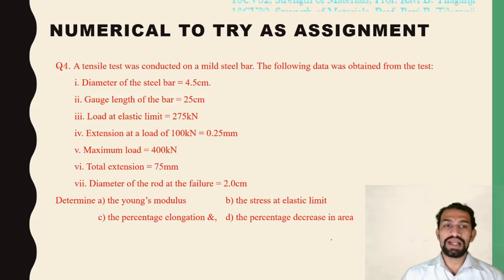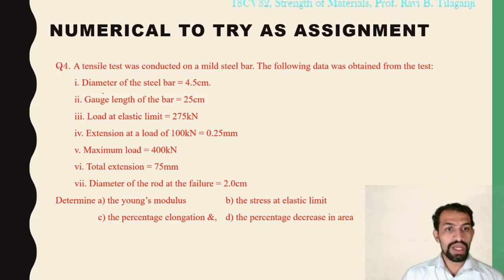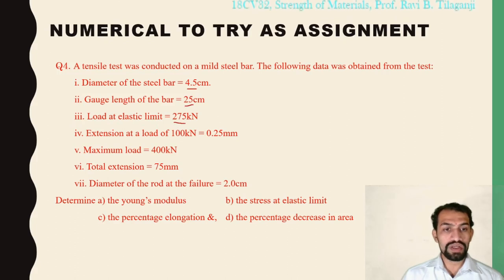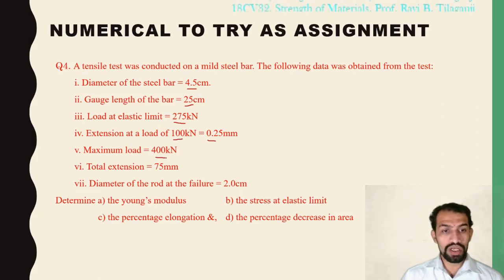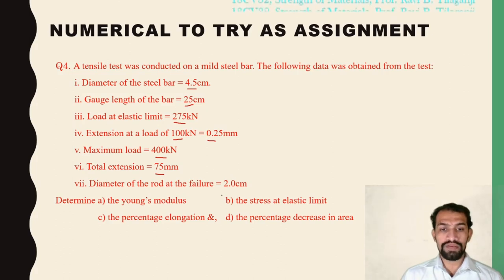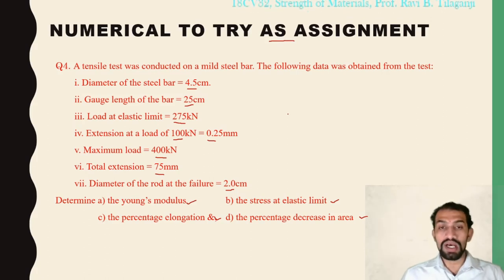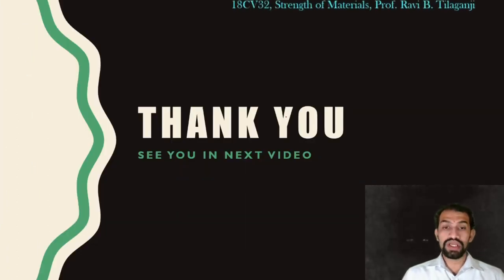As an assignment, try the same type of numerical: tensile test on a mild steel bar with diameter 4.5 cm, gauge length 25 cm, elastic limit load 275 kN, extension at 100 kN is 0.25 mm, maximum load 400 kN, total extension 75 mm, diameter at failure 2 cm. Use the same formulas — only the values change. Please submit it. Thank you, see you in the next video.